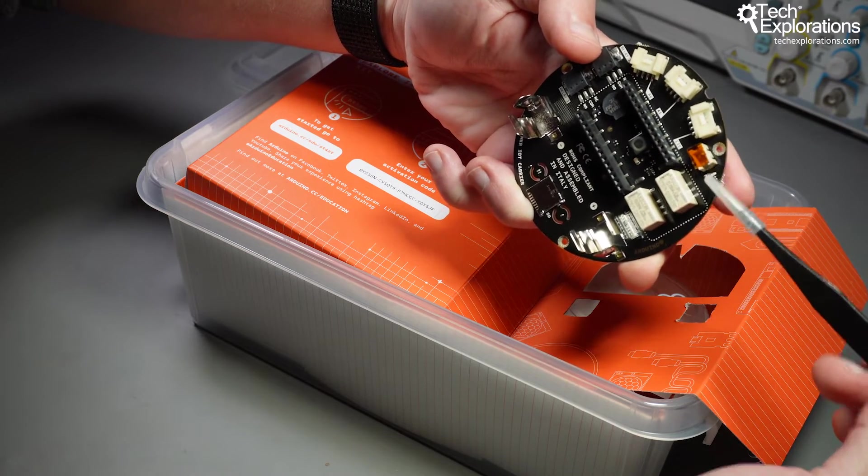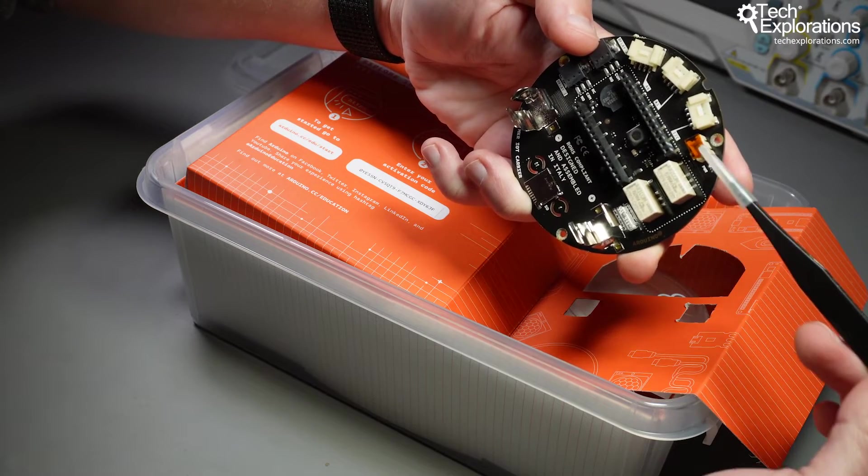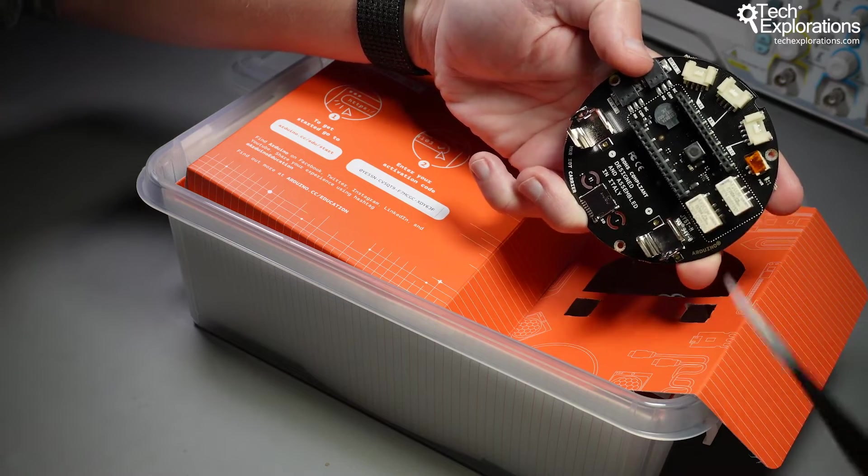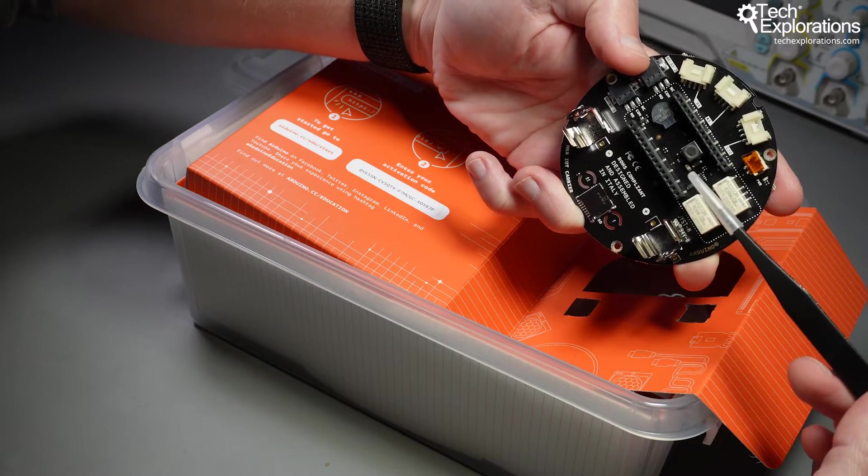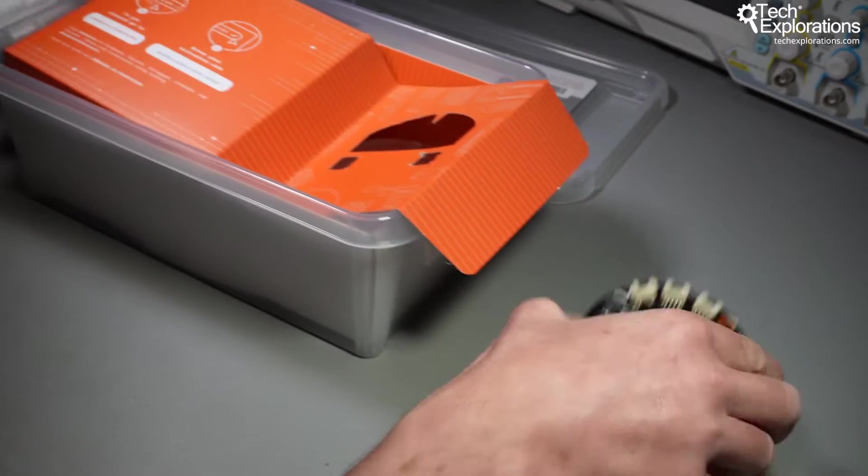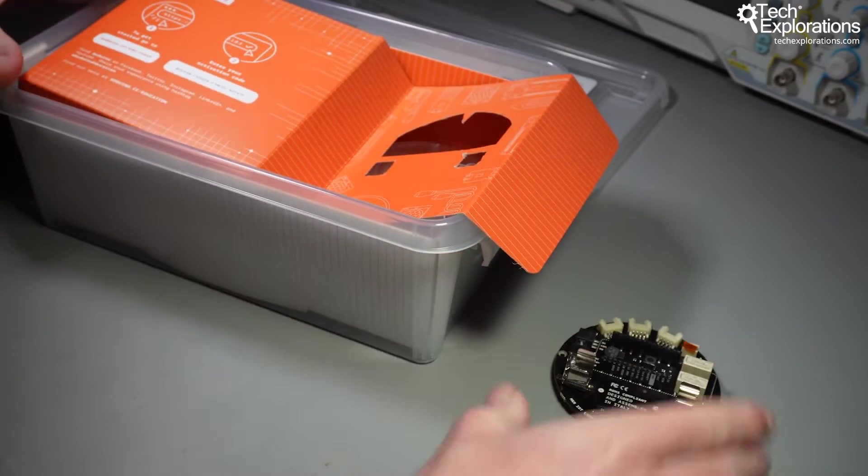This connector here is for your battery, so you can use a short cable that is also included in the kit to connect battery power to your Arduino MKR 1010 device. So that's the carrier board.